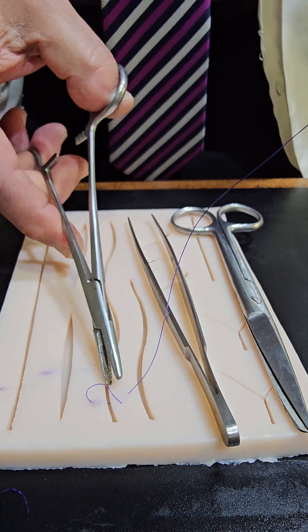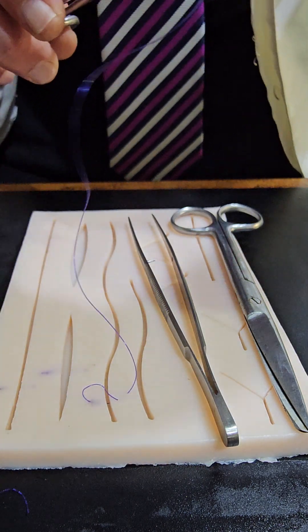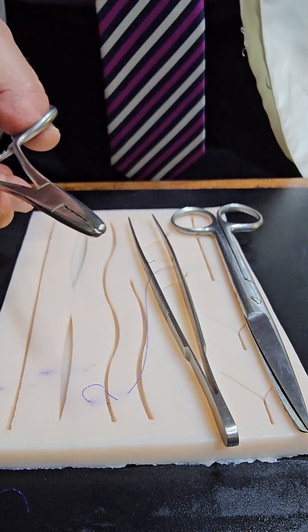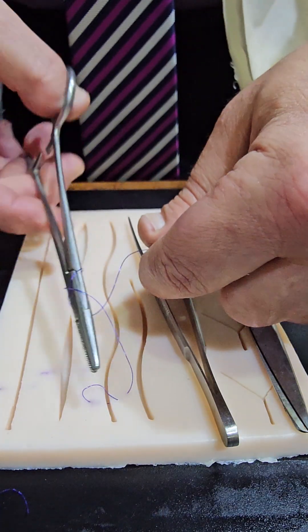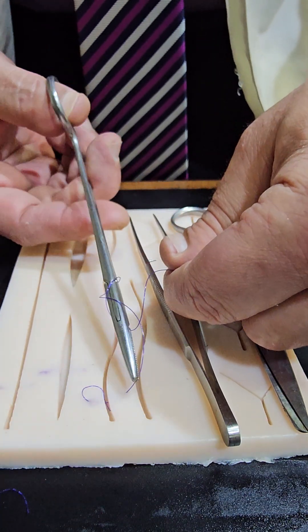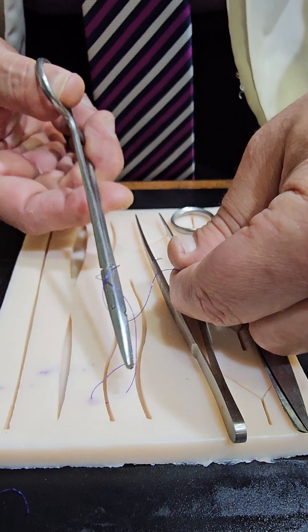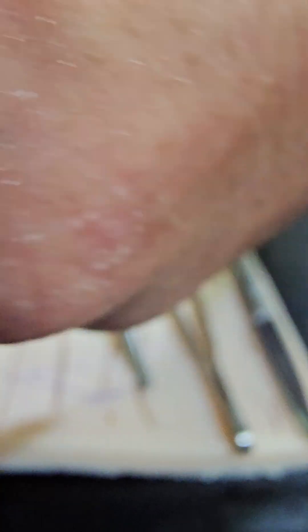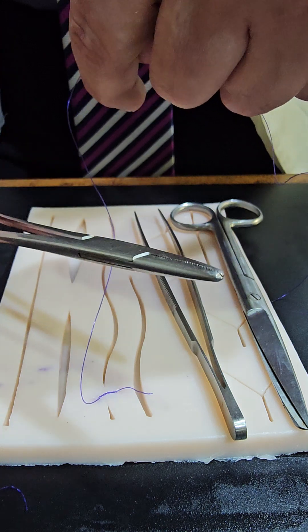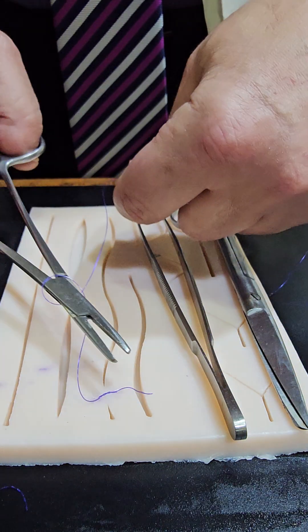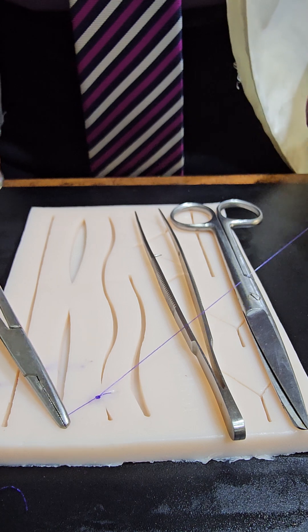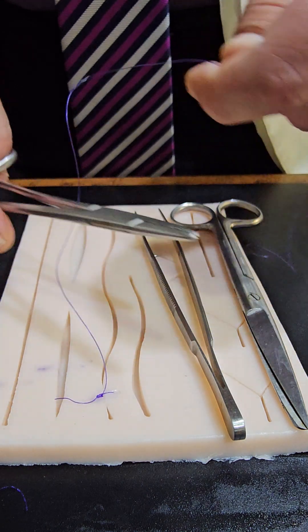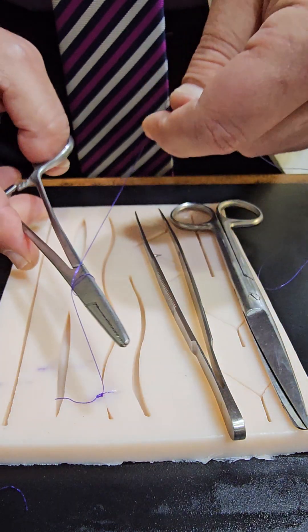Then take the first surgical suture by wrapping it twice around the needle holder like this. Next look. Another one wrap once. Another one wrap once.